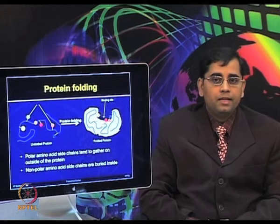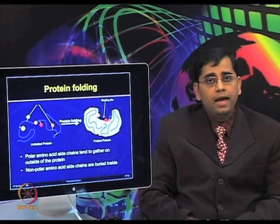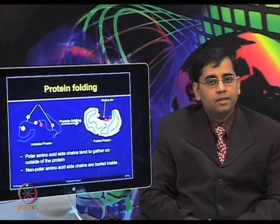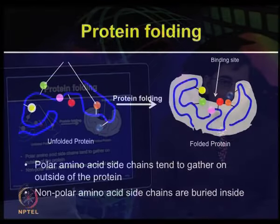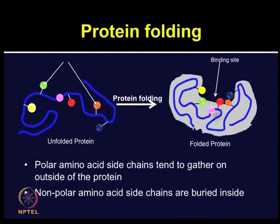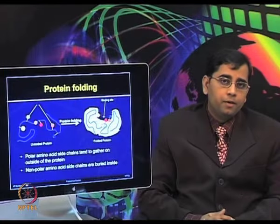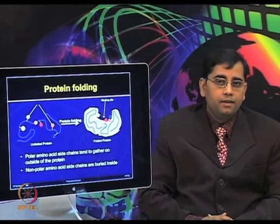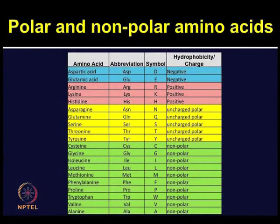The protein folding process is governed by distribution of polar and non-polar amino acids. The polar side chains tend to arrange themselves near the outside of the molecules — for example, arginine, glutamine, and histidine. The non-polar side chains have a tendency to cluster in the interior of molecules — for example, phenylalanine, leucine, valine and tryptophan. This chart shows the various amino acids which belong to polar and non-polar categories, and you can think of how they govern the protein folding process.